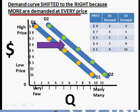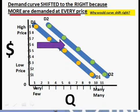The curve has shifted to the right, and again when the curve shifts to the right, what it's telling us is that more is going to be demanded at every price. Price has not changed, but at every price more would be demanded. The first reason for this is simply that there are a lot more consumers, as in our example — that would cause more to be demanded at every price.